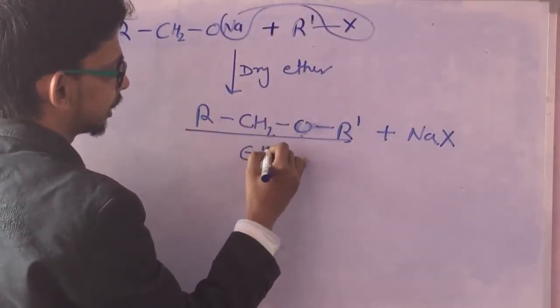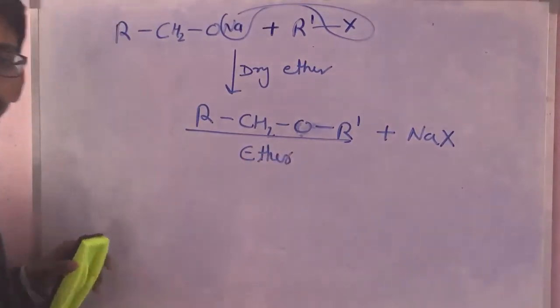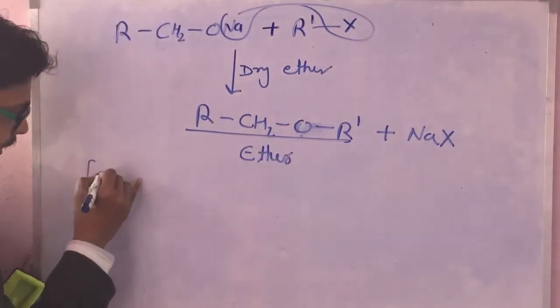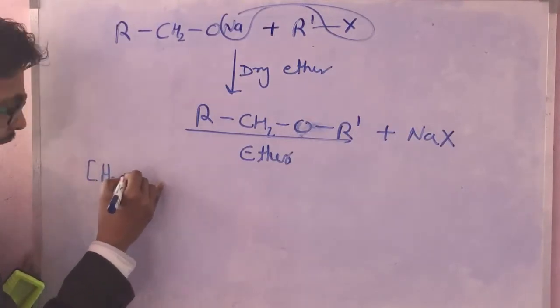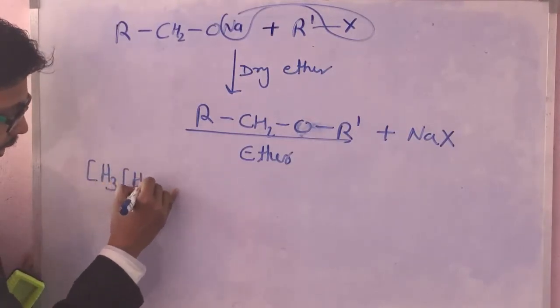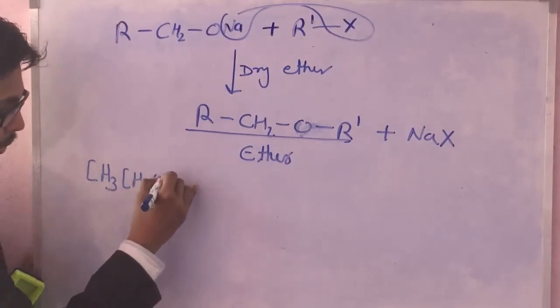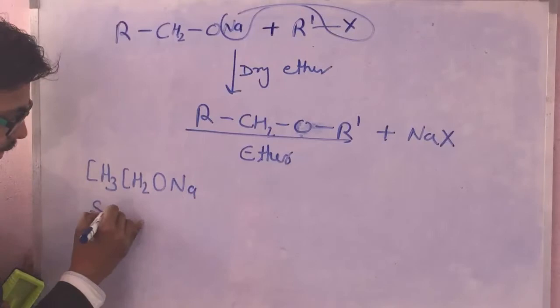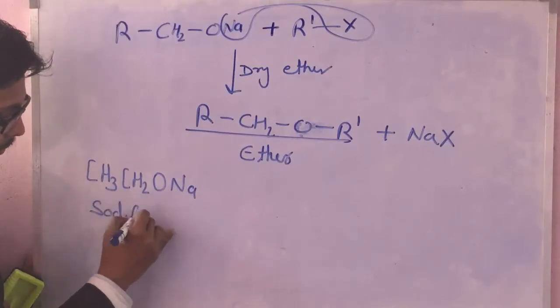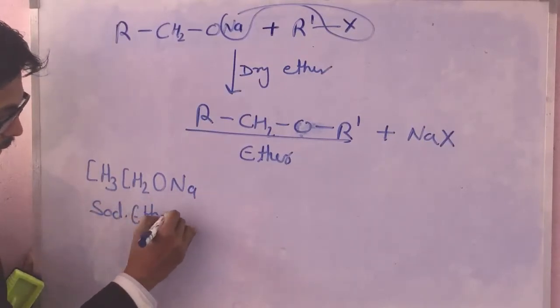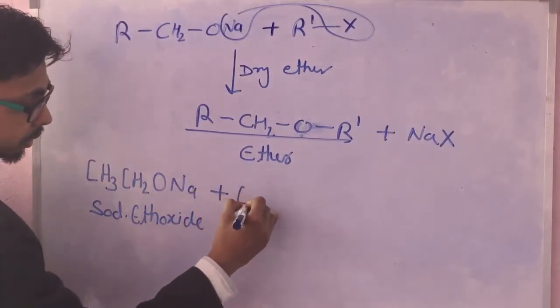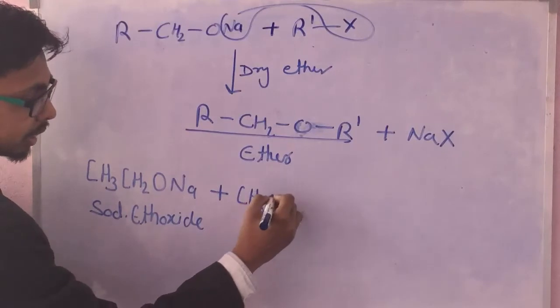For example, if I have CH3-CH2-O-Na, that is sodium ethoxide, with CH3-Cl, that is chloromethane, it results into formation of...